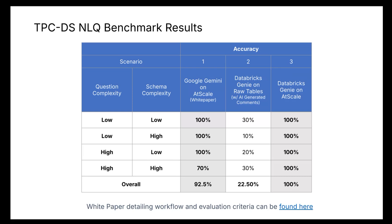In that white paper, we used the TPCDS Retail Data Set. It's a very complex set of tables and is a complex model. We actually tested those queries with a semantic layer and without a semantic layer. There's a total of 40 questions — 10 in each of four categories — when it comes to question complexity as well as schema complexity. Schema complexity means that the question required four or more joins.